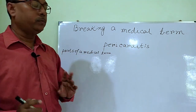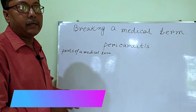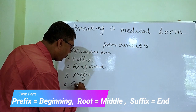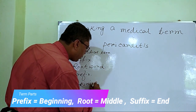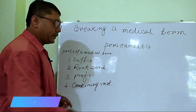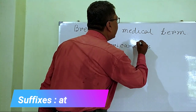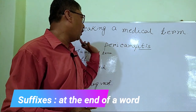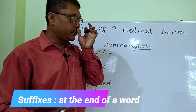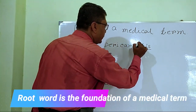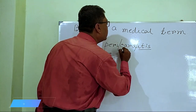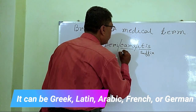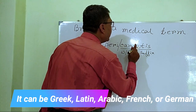Let me tell you the parts of a medical term. The parts are: suffix, root word, prefix, and combining vowel. The suffix is the end part — the last part of a medical term. The root word, also called the word root, is the main part of the medical term.